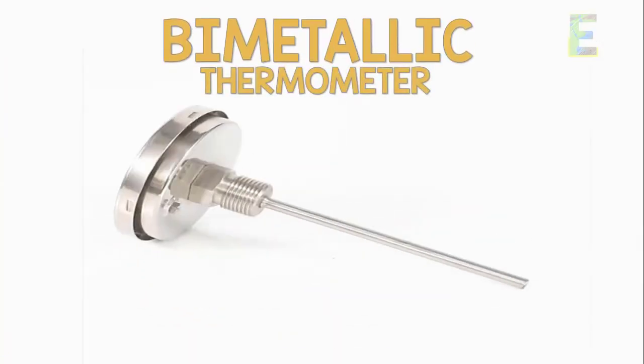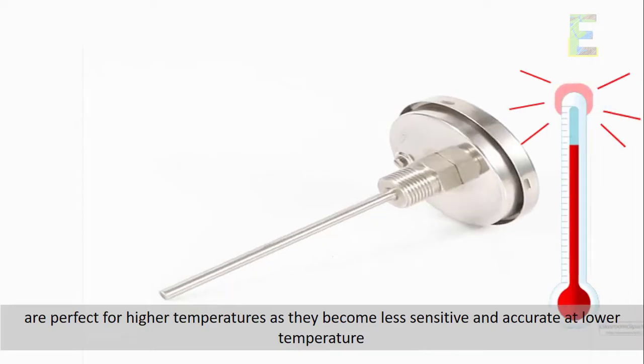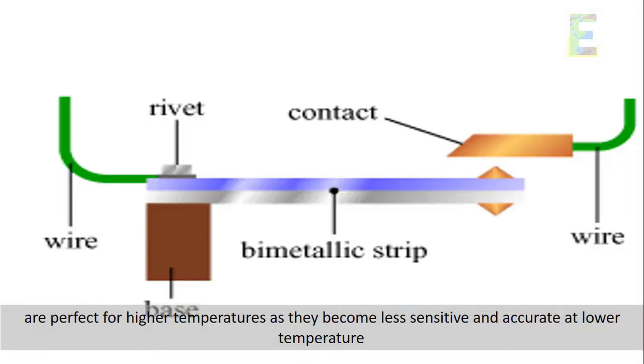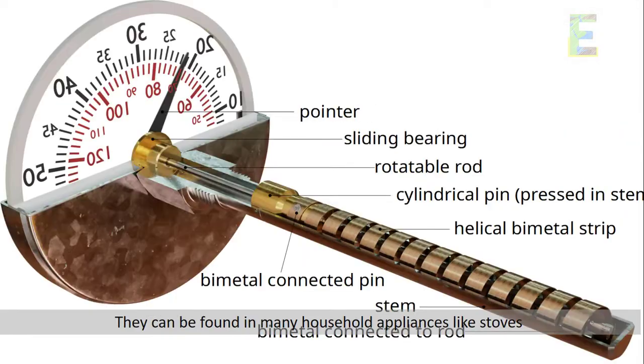Bimetallic thermometers. They are perfect for higher temperatures as they become less sensitive and accurate at lower temperature. They can be found in many household appliances like stoves.